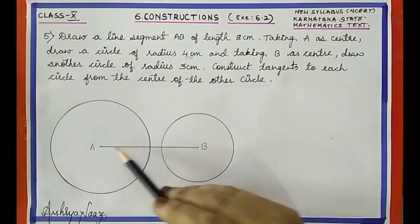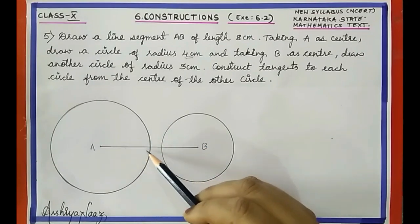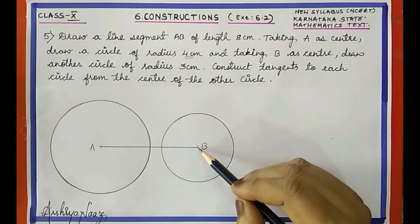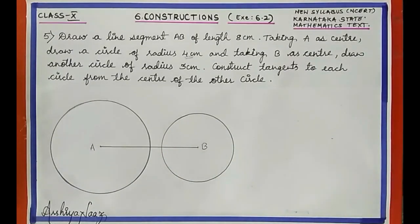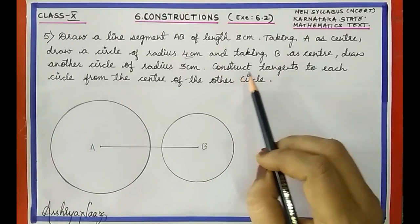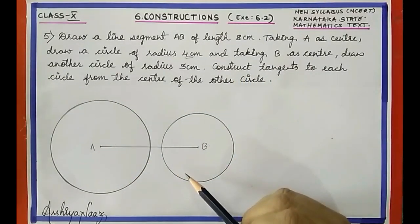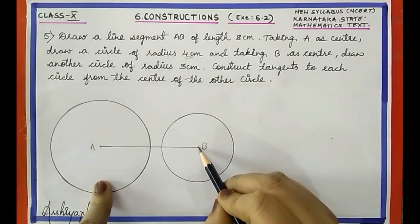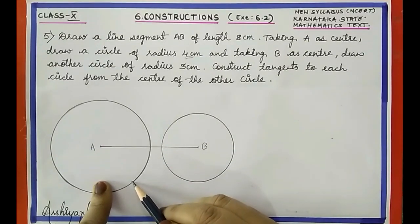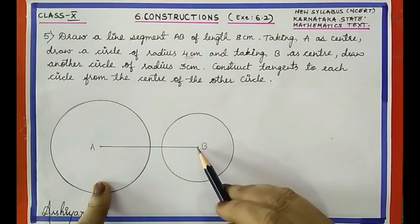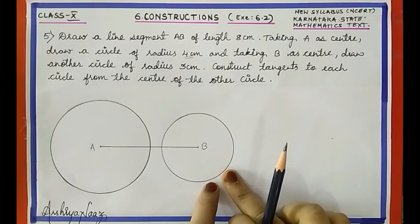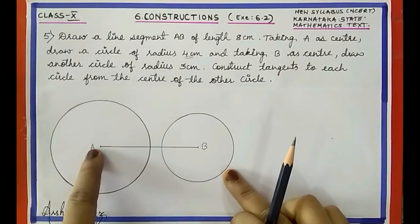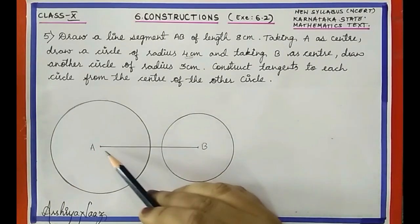Now we have drawn the line segment AB of length 8 centimeter, a circle of radius 4 centimeter from point A, and another circle of radius 3 centimeter from point B. Now we have to construct tangents to each circle from the center of the other circle. For the first circle we construct tangents from point B, which is an external point, giving two tangents. Similarly, for the second circle we construct tangents from point A, giving another two tangents.